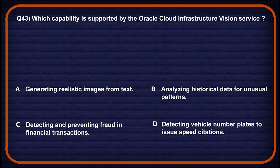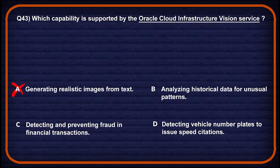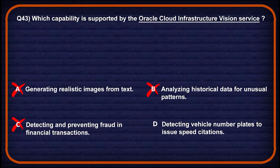Let's look into question number 43: which capability is supported by Oracle Cloud Infrastructure Vision services? Option A: generating realistic images from text — this is a generative AI task not supported by OCI Vision, so wrong. Option B: analyzing historical data for unusual patterns — that relates to anomaly detection, not image-based tasks, so wrong. Option C: detecting and preventing fraud in financial transactions — fraud detection is handled by specific models, not vision services, so wrong. Option D: detecting vehicle number plates to issue speed certifications — OCI Vision supports OCR and object detection, enabling license plate recognition, so this is the correct one.